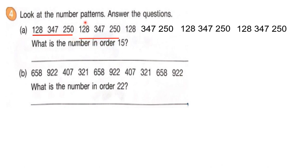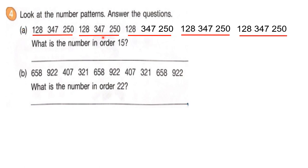We will count how many numbers there are. The question is: what is the number in order 15? Counting through the repeating pattern of 128, 347, 250 — positions 1 through 15 — position 15 falls on the third slot of the fifth group. So the number in order 15 is 250.